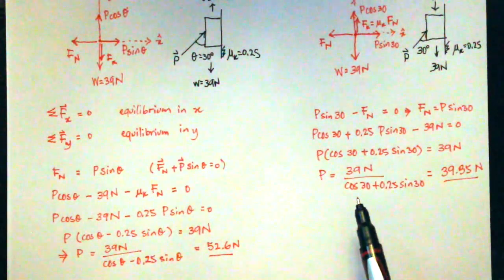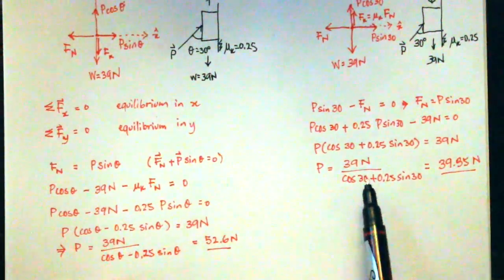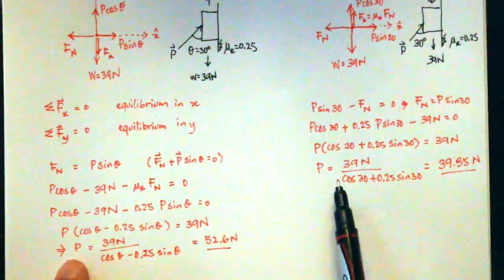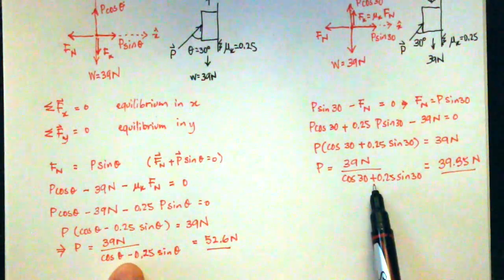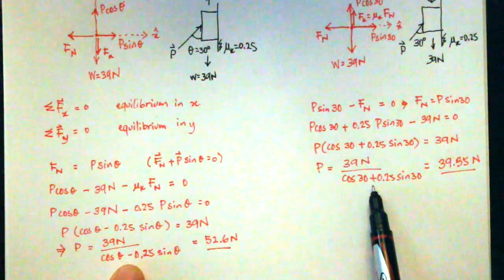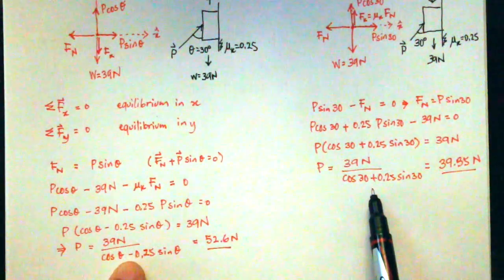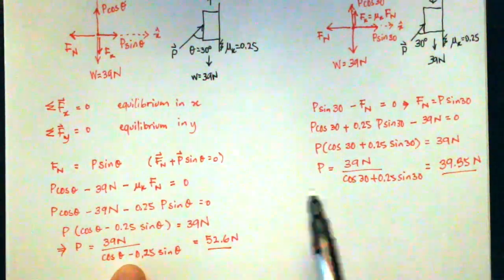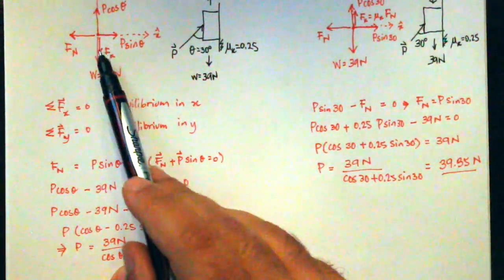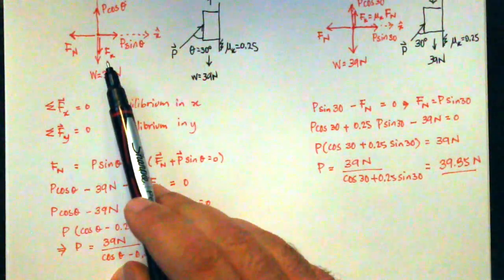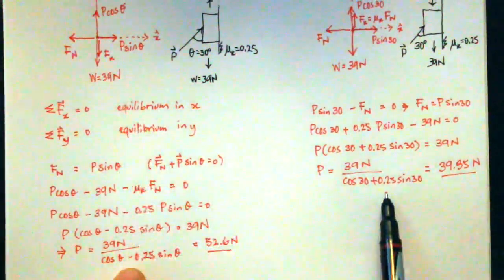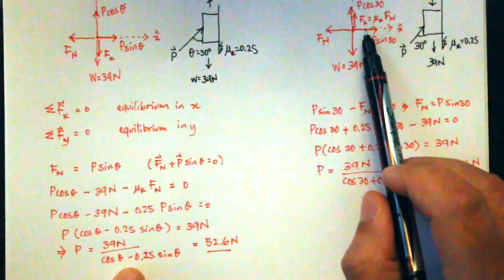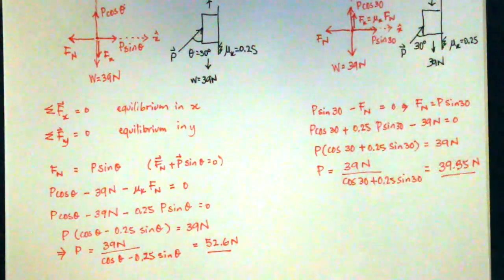Notice that the difference in the required force P between the two cases comes down entirely to the sign of the friction force term: negative when the block moves up (friction acts downward) and positive when the block moves down (friction acts upward).